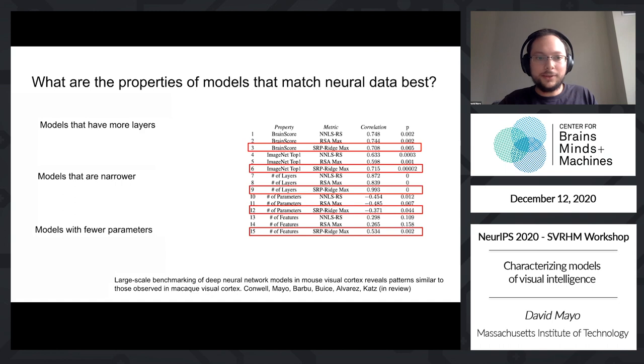Another key result is suggestions as to how we can improve our models to make them more brain-like. What we've seen by ranking many models is that models that have more layers is better correlated with having a high brain score and high mouse brain score. Also models that are narrower as opposed to wider and models that have fewer parameters score better and are more brain-like. Additionally, we found that our mouse brain score metric is highly correlated with primate brain score, showing that we have another animal model and a set of more neurons that we can use to compare our deep learning models to brains.